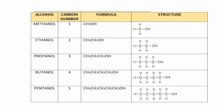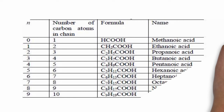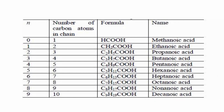Here is the homologous series of carboxylic acids. The ending name is '-noic acid.' With one carbon atom it is methanoic acid, then ethanoic acid, propanoic acid, butanoic acid, and pentanoic acid. These are the members of the carboxylic acid homologous series according to their respective carbon atoms.